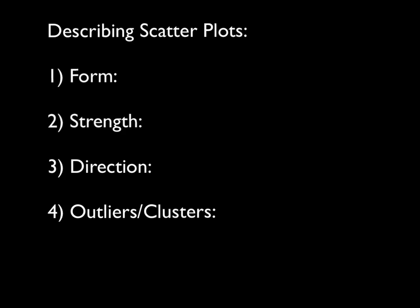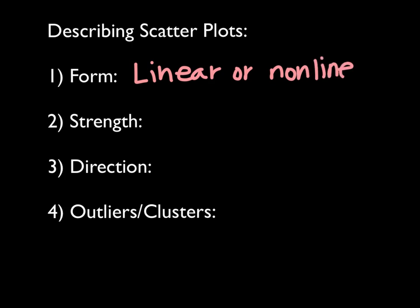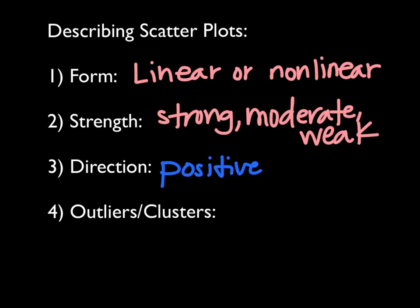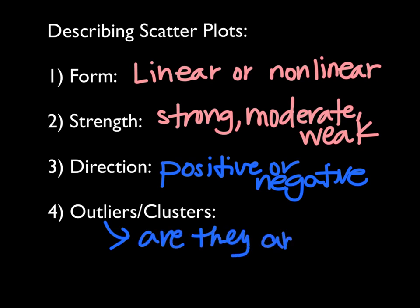When you describe a scatter plot, there are four things you need to try to describe — put these in your notes. The first one is its form: is it linear or nonlinear? The next one is strength: is there a really strong relationship, is it moderate, or is it weak? The next one is direction: is it going up or down? In the words we use — is it positive or negative correlation? And then the last one is outliers or clusters: just describe if there are any and why that might be.